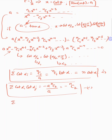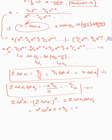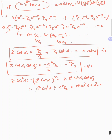Now I can say: sigma cot²(αᵢ) equals [sigma cot(αᵢ)]² minus 2·sigma cot(αᵢ)·cot(αⱼ). This becomes n²·cot²α minus 2·(minus nC2), which gives n²·cot²α plus nC2. And remarkably, n²·cot²(αᵢ) is n²·cos²α.